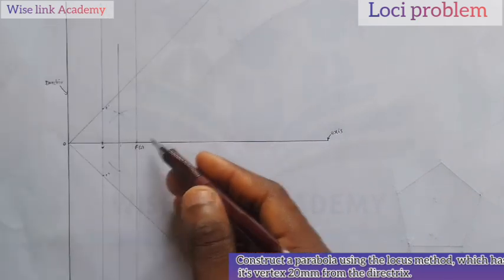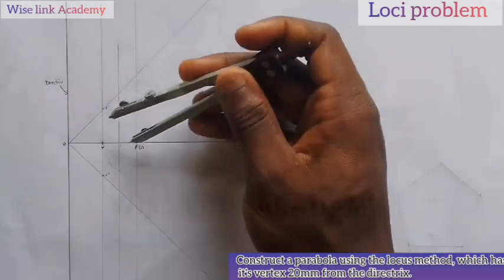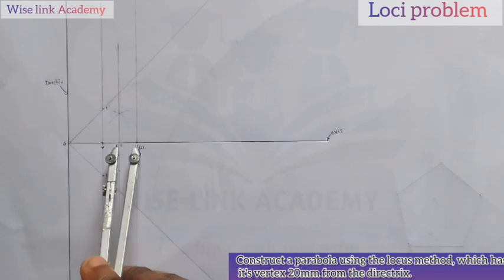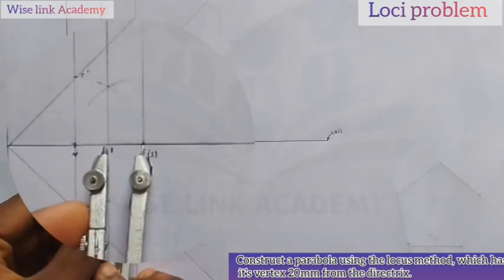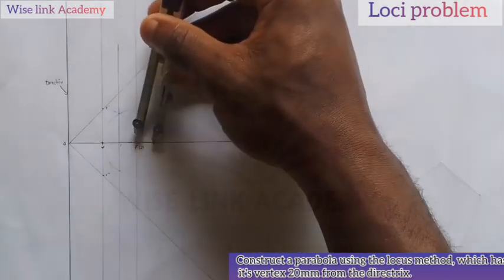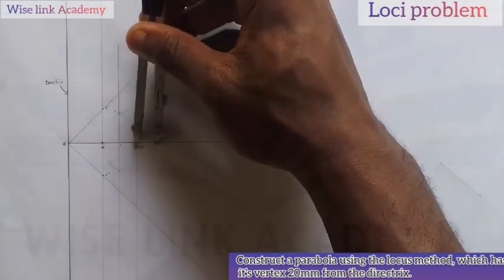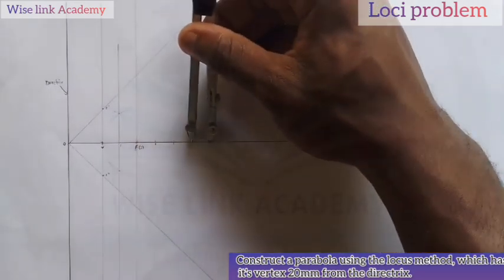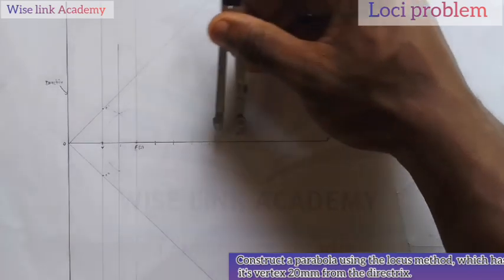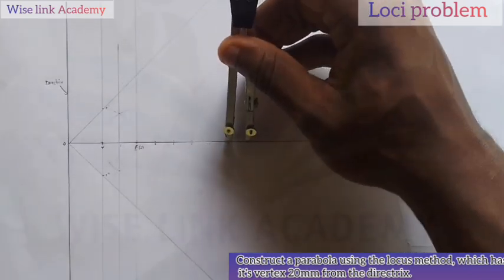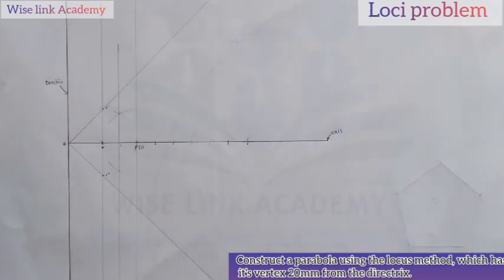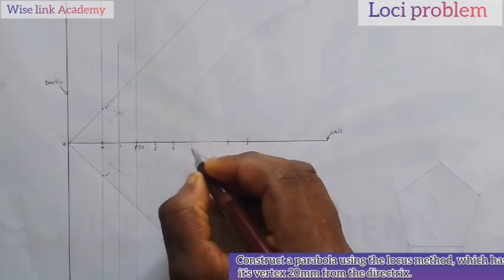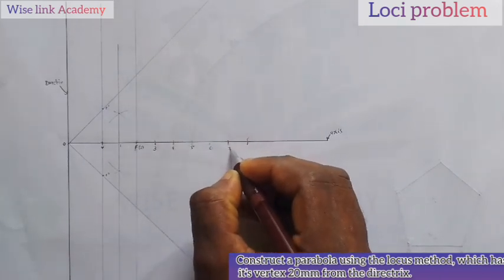So, I need to get point 3, 4, 5, 6. So, to do that, I will measure from F to 1. You can see F to 1. I will now transfer that point. This is 2. This is 3. 4, 5, 6, 7, 8. As much as you wish. But, I will just stop at that point. This is 2. This should be 3. This is 4, 5, 6, 7, 8.